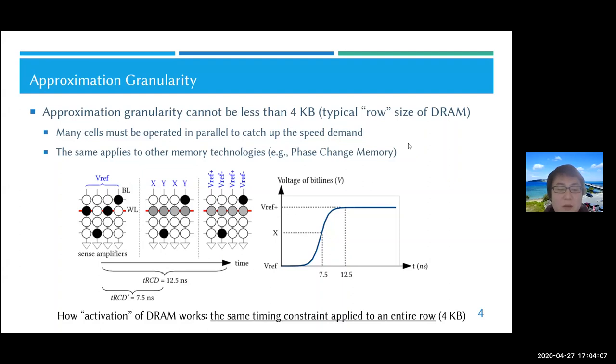It takes up to 12.5 nanoseconds, but we can reduce this time to, let's say, 7.5 nanoseconds. We can still read the data because, as you can see from the right side of the figure, the voltages have been pulled up a little bit. This is how activation of DRAM works if we reduce the timing constraint.